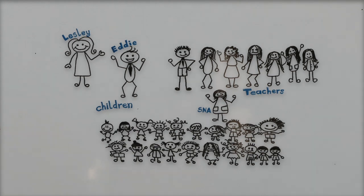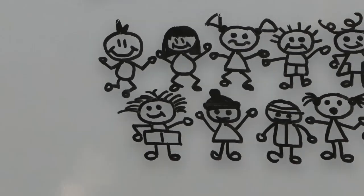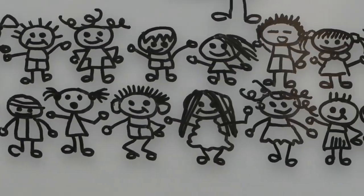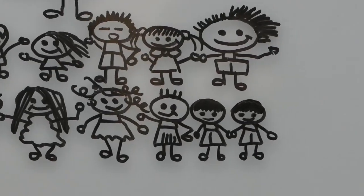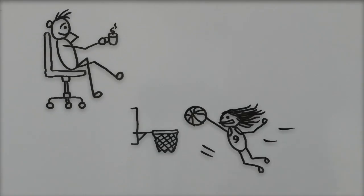In year two, we welcomed 60 new junior infant pupils and six new members of staff. And in September 2010, Lucan East got a new extension, making it an 18 classroom school, which now had a staff room, a PE hall and a library.